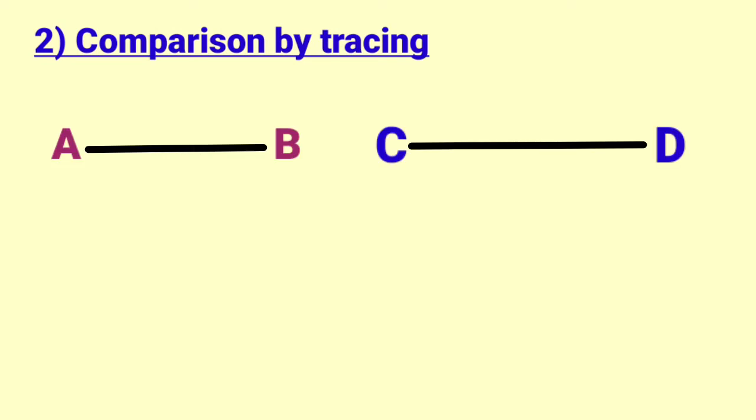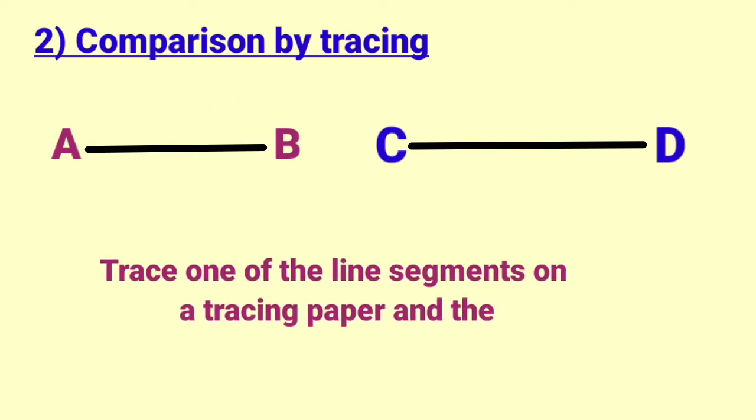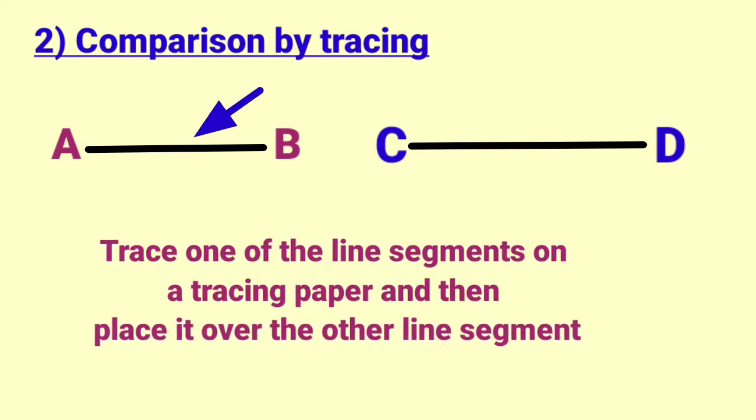So, the second method is comparison by tracing. Two line segments are given, AB and CD. In this method, we have to trace one of the line segments on a tracing paper and then place it over the other line segment.